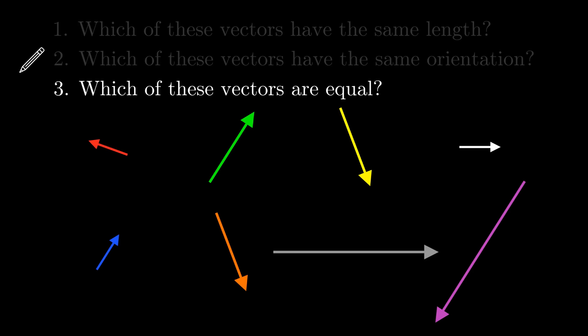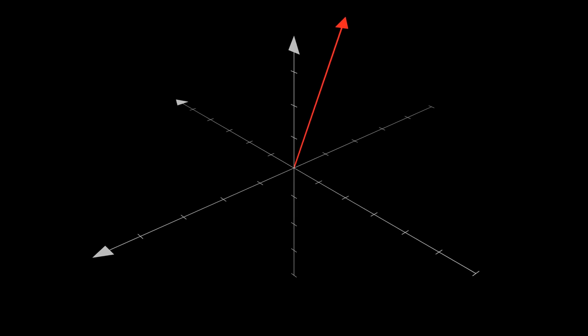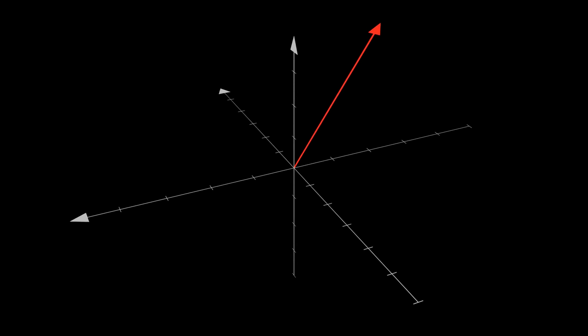Before we move on, I want to note that while I have been showing vectors in two dimensions, they are not limited to two dimensions. Here is a vector in three-dimensional space. I have been showing vectors in two dimensions because vectors are easier to draw and think about in two dimensions. In fact, even though we can't comprehend it visually, we can also have vectors in higher dimensional spaces as well, which I'll explain in more detail later.